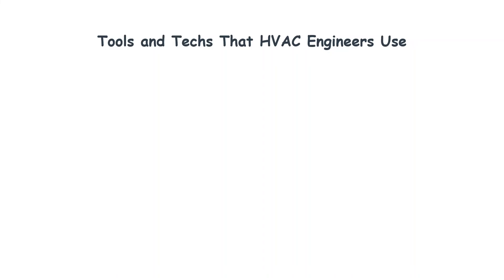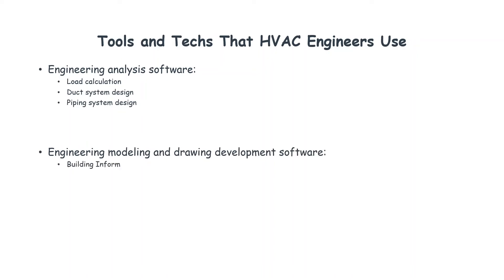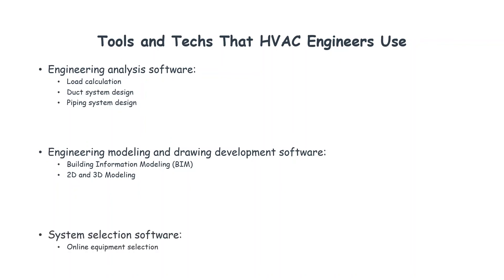HVAC engineers use many tools and software to design HVAC systems on a daily basis. The first set is engineering analysis software, used for load calculation, duct system design, and piping system design. The second set is engineering modeling and drawing development software, including building information modeling (BIM) and 2D or 3D modeling software. The last set is selection software, which includes web-based online tools and installed software applications.